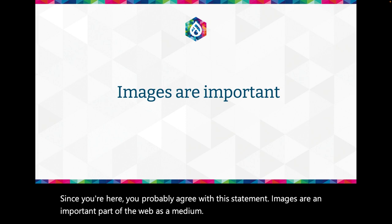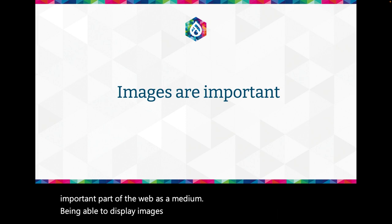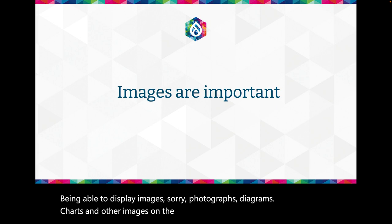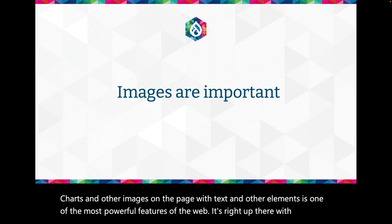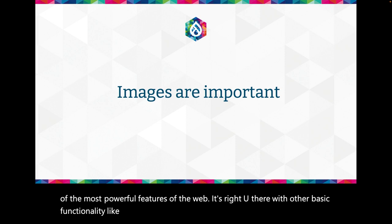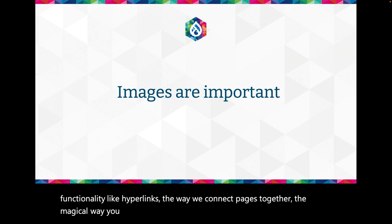Being able to display photographs, diagrams, charts, and other images on the page with text and other elements is one of the most powerful features of the web. It's right up there with other basic functionality like hyperlinks — the magical way you can go from one page to another. So it's fundamental to our experience on the web.